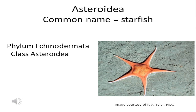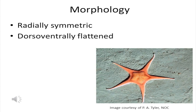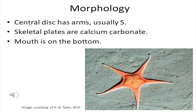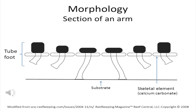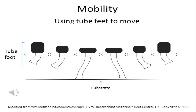Now I would like to take up the animals in the largest size class — the megafauna. Asteroidea are the starfish; they are a class in the phylum Echinodermata. In the deep sea, starfish are a few centimeters to a few tens of centimeters in diameter. Starfish are radially symmetric and dorsoventrally flattened. They have a central disc that bears arms — usually five — with skeletal plates of calcium carbonate, and the mouth is on the bottom. Tube feet extend through the skeletal plates, and starfish use their tube feet to move. Starfish live in or on the seabed.